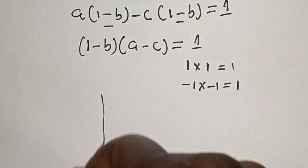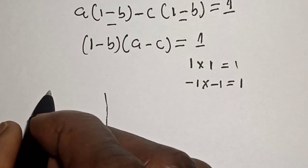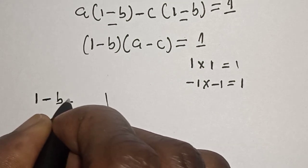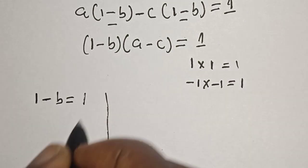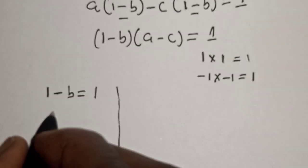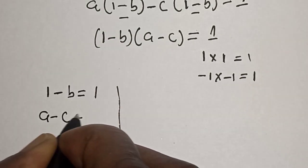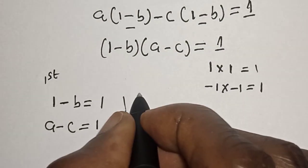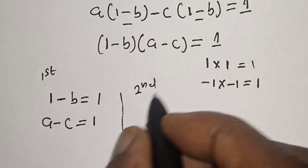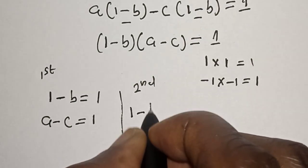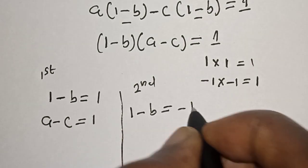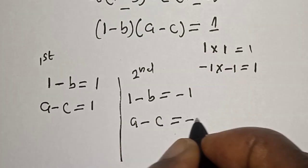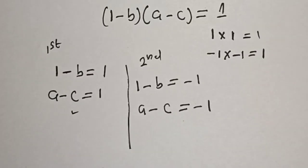The two cases are: Case 1 — (1 − B) = 1 and (A − C) = 1. Case 2 — (1 − B) = −1 and (A − C) = −1.